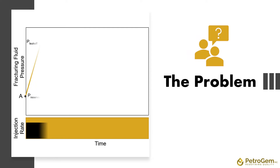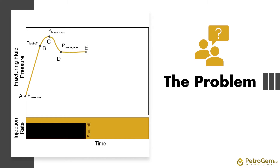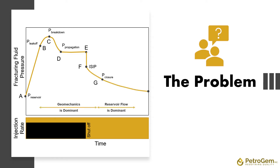Pressurized fracturing tests, such as Mini-Frac or DFIT, provide crucial information about the stresses and other important geomechanical and geological aspects of the rocks. In this episode, we want to study an idealized pressure curve for such tests, break it down into different segments, and explain the geomechanics behind each of these segments.